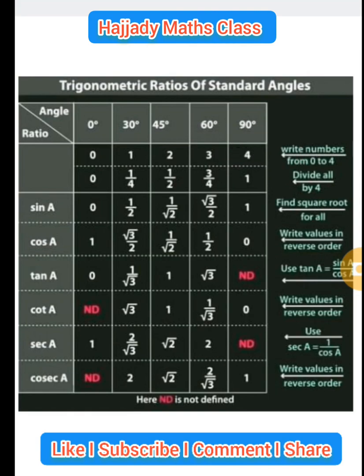Now, the first thing we have to do is this. Just write numbers 0 to 4. 0, 1, 2, 3, 4. That is the first thing you have to do.